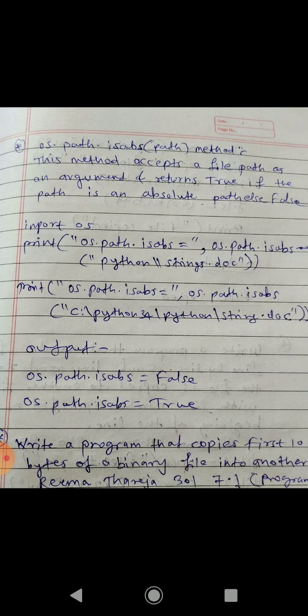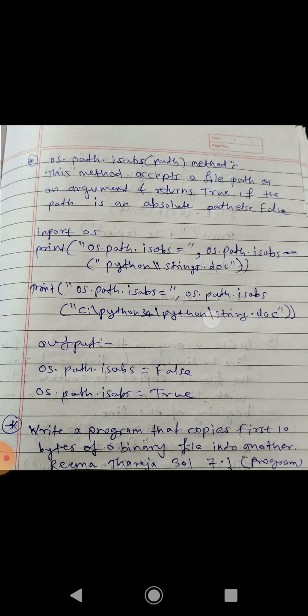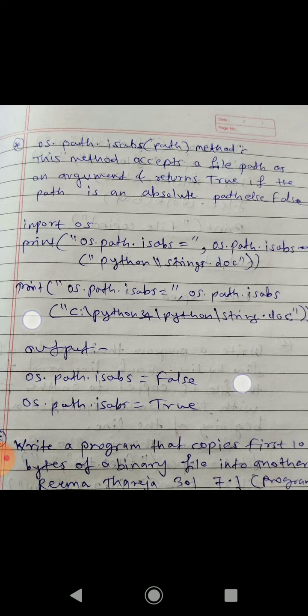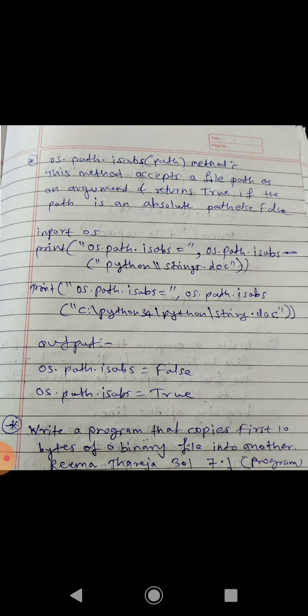Next one is os.path.isabs() method. This accepts a file path as an argument and returns True if the path is an absolute path, or False otherwise. For example: os.path.isabs('python/string.py') returns False, and os.path.isabs('C:\Python\string.py') returns True. The first path is not an absolute path, so it returns False; the second is an absolute path, so it returns True. Thank you.